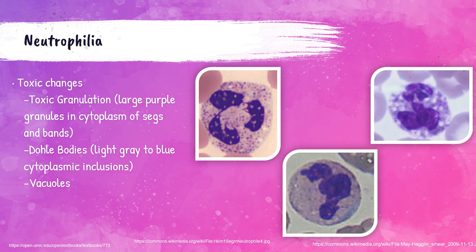When a patient has neutrophilia, the neutrophils will often undergo toxic changes that we can see while performing a manual cell differential. These changes are toxic granulation, döle bodies, and vacuoles. Toxic granulation is when there are large purple granules in the cytoplasm of segmented neutrophils. This segmented neutrophil here is showing toxic granulation — you see all those larger purple granules present in the cytoplasm.